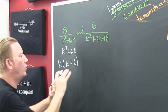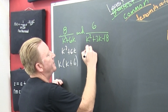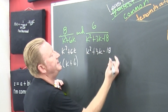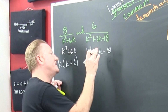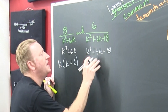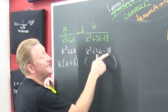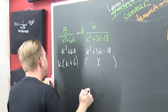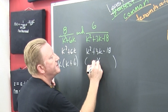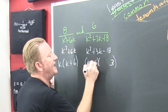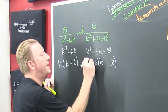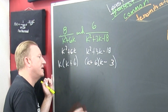Now I need to factor that denominator: k squared plus 3k minus 18. I'm looking for the factors of 18 that subtract to be 3. That's going to be a 6 and a 3, because 6 times 3 is 18, and 6 minus 3 is 3. So that factors to (k+6)(k-3). The signs are different, and the big one is going to be positive, negative.